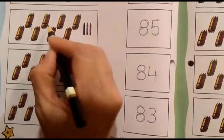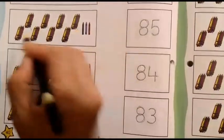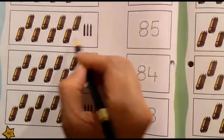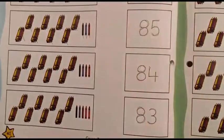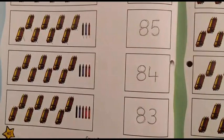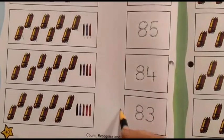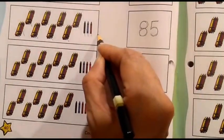Again, 10, 20, 30, 40, 50, 60, 70, 80, 81, 82, 83. Where is number 83? You can see 83, 83. So, let's match these two.